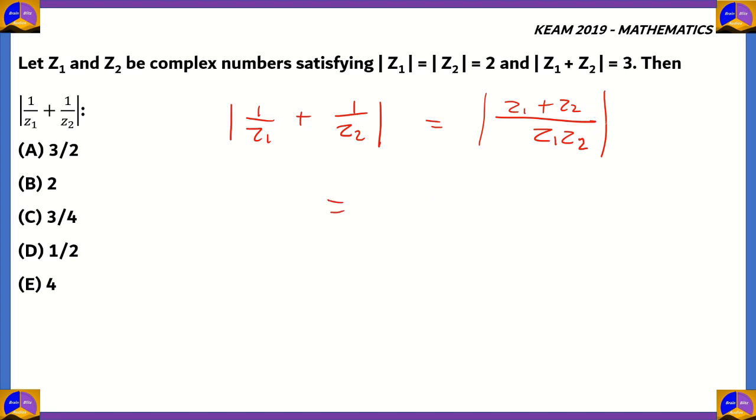Now, we're going to take the modulus on both sides. So, basically, we have mod of z1 plus z2 divided by the mod of z1 times mod of z2. From here, it's pretty easy to put in the values.